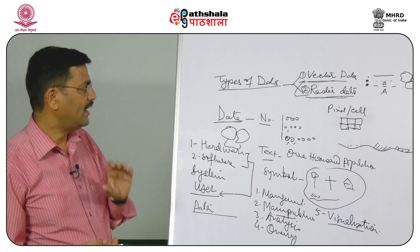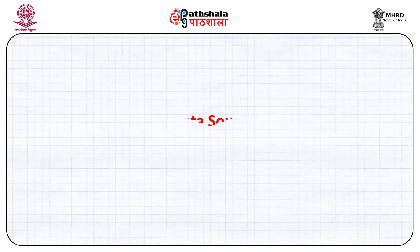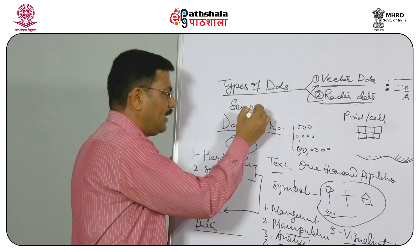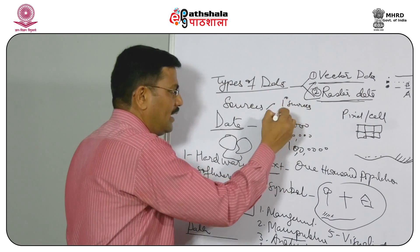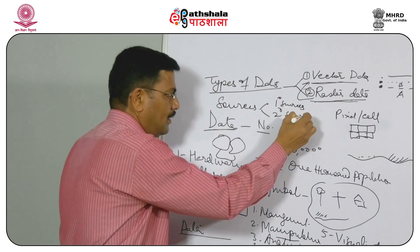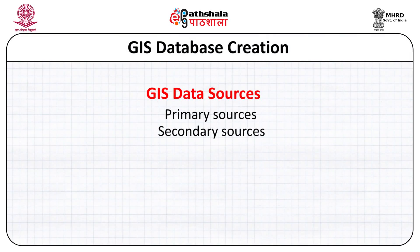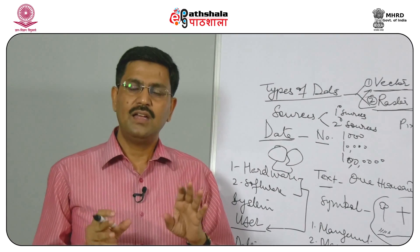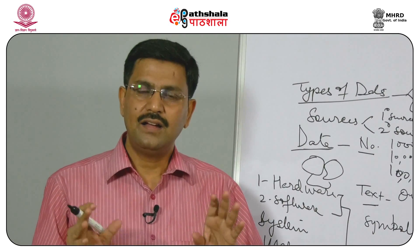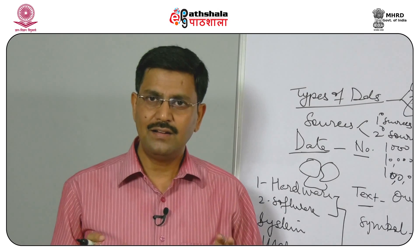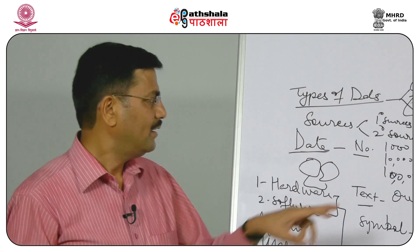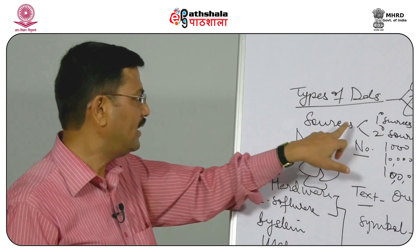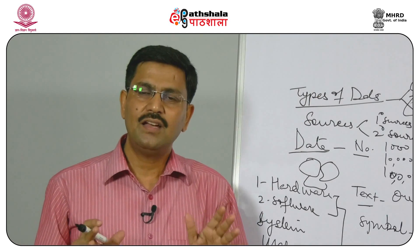Now let us understand what are different sources of data. There are two sources: one is primary sources and second is secondary sources of data. The moment I say primary sources of data, that means we can go to the field and collect the data by surveying. That socioeconomic data, physical data — all these data can be used as a primary source for GIS database creation.